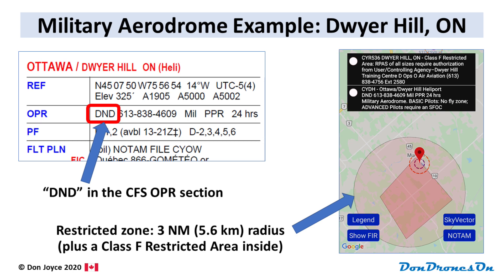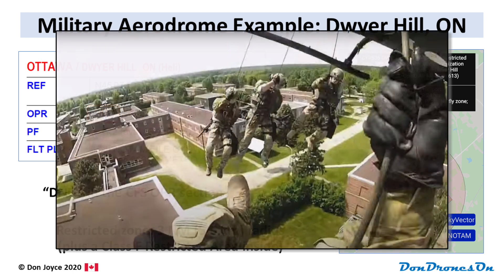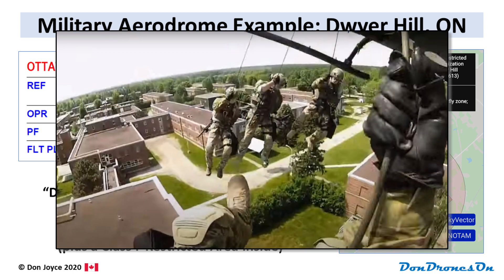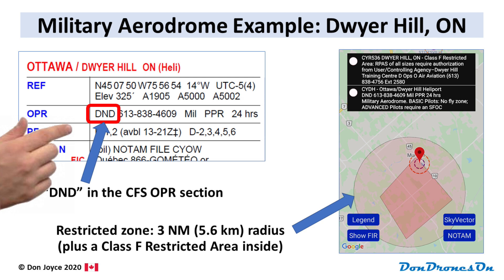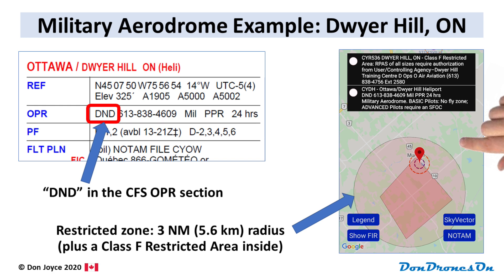Here's an example: Dwyer Hill, Ontario, the home base for Joint Task Force 2. There's a heliport located on the base, and as you can see in the OPR listing from the CFS, DND is clearly identified. Even though this is just a heliport, there's a 3 nautical mile restricted zone around the site, as well as a Class F restricted zone inside — that's the squarish area shown in Drone Pilot Canada. In this case, there is no other controlled airspace around the area.